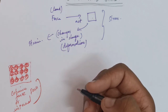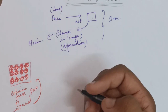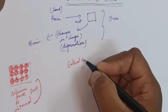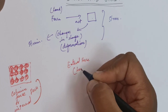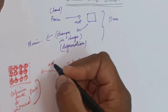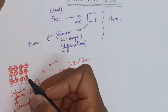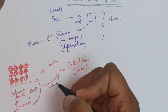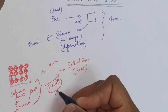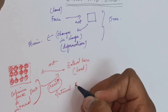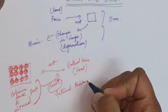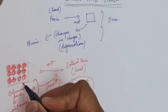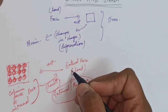By Newton's third law — for every action there is an equal and opposite reaction — the same applies here. If an external force or load is acted on a body, the molecules bound by internal force will resist the external force. This is called the internal resistant force. This internal resistance force created within the body to resist the external force is called stress.